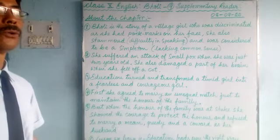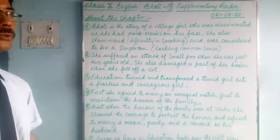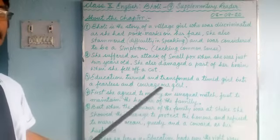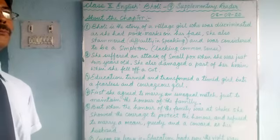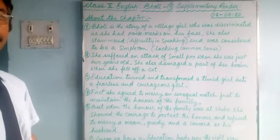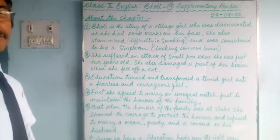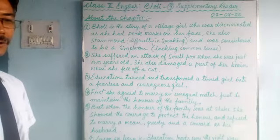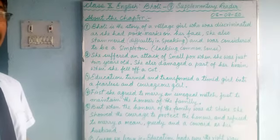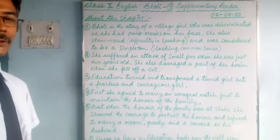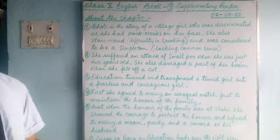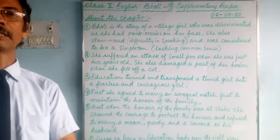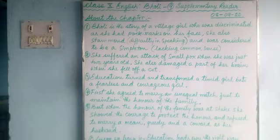In our next class, we will go through the chapter paragraph by paragraph. This was just an overview of what the whole chapter is about — a young girl who became courageous and fearless, fought for her rights, and fought for the honor of the family. All the people were surprised and astonished to see her bravery and knowledge. Thank you very much for watching so nicely and attentively. We will meet in the next class and continue.